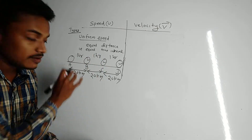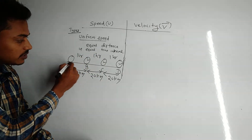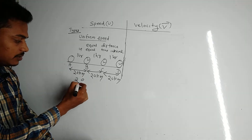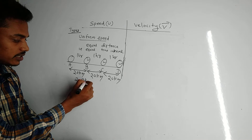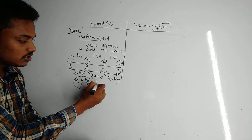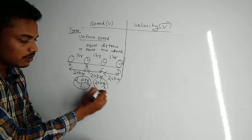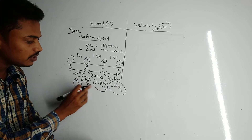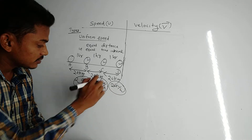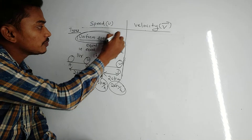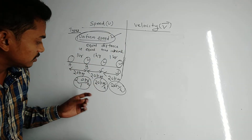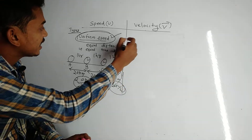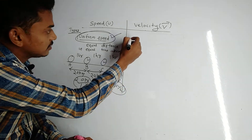The body covers equal distances — 20 km, 20 km, 20 km — in equal time intervals of one hour each. So the speed from A to B is 20/1 = 20 km/hr, B to C is 20 km/hr, and C to D is 20 km/hr. Since the speed is constant throughout, the body is said to be moving with uniform or constant speed.